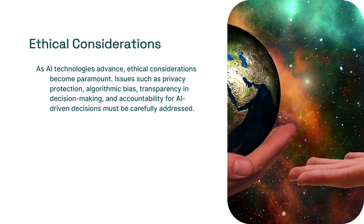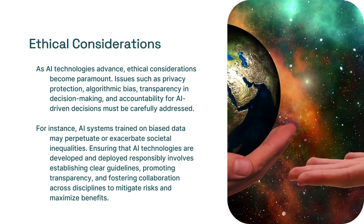As AI technologies advance, ethical considerations become paramount. Issues such as privacy protection, algorithmic bias, transparency in decision-making, and accountability for AI-driven decisions must be carefully addressed. For instance, AI systems trained on biased data may perpetuate or exacerbate societal inequalities. Ensuring that AI technologies are developed and deployed responsibly involves establishing clear guidelines, promoting transparency, and fostering collaboration across disciplines to mitigate risks and maximize benefits.